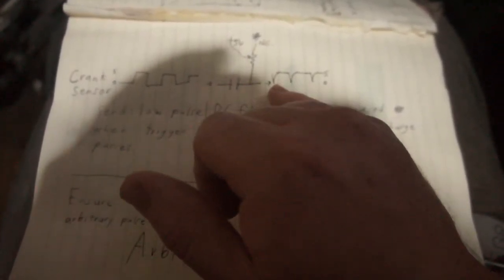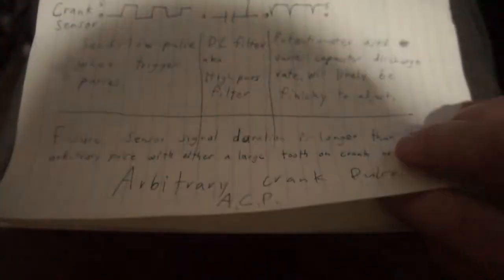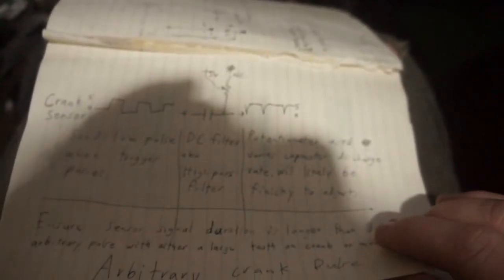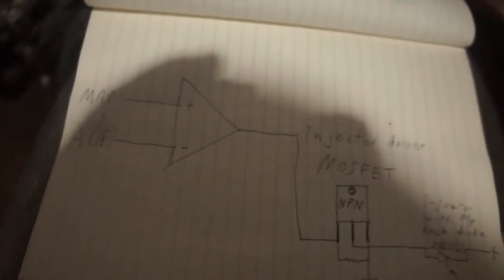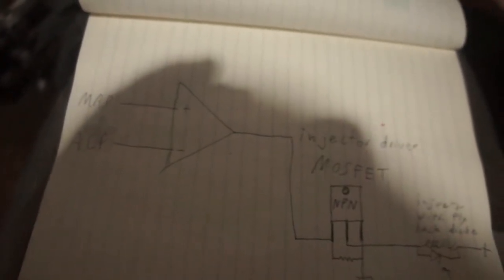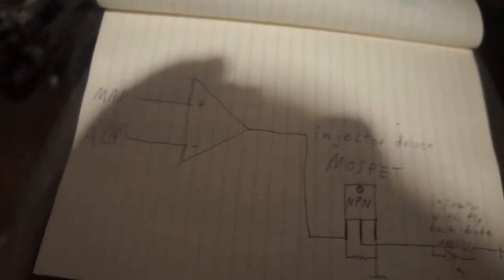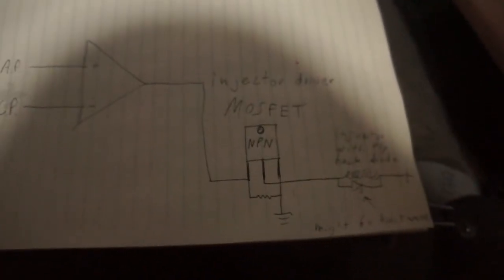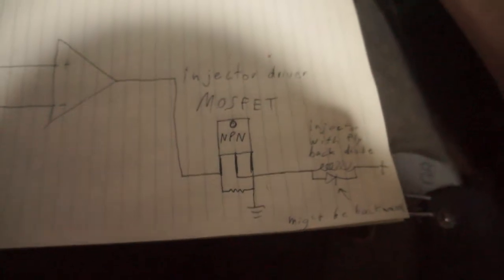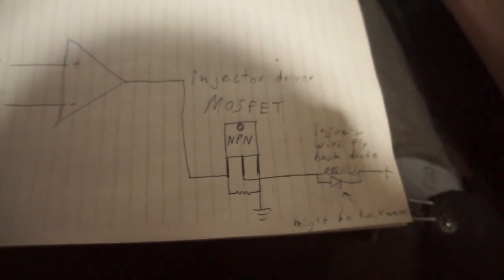So that arbitrary crank pulse that I get at the end there and the MAP sensor just go into a comparator. And the MAP sensor signal is higher than that arbitrary crank pulse - MOSFET turns on, wires injector, flyback diode on it that I might have wrote in backwards.